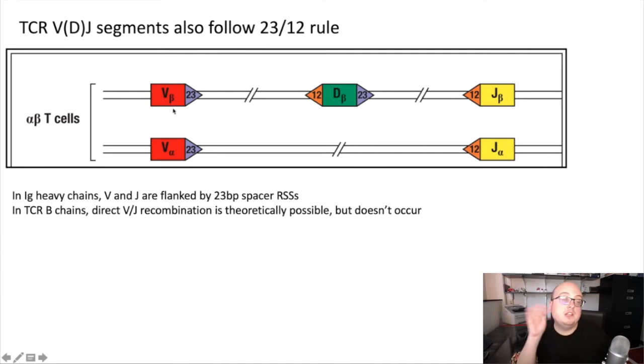For the beta chain, it looks more like the heavy chain of immunoglobulin. The V segments of the beta chain have 23 base pair spacers, and the Js have 12. The Ds in between, upstream have a 12, and downstream have a 23 to make sure that they associate with the correct one in the correct direction. A difference here though: in the immunoglobulin heavy chains, the V and the Js were both flanked by a 23 base pair spacer. So both V and J had the same spacer. That was a natural checkpoint to make sure in the heavy chain we did not get any V and J recombination. We always had to have a D in between, otherwise we would violate the 23-12 rule.